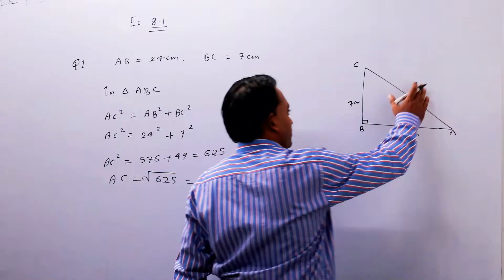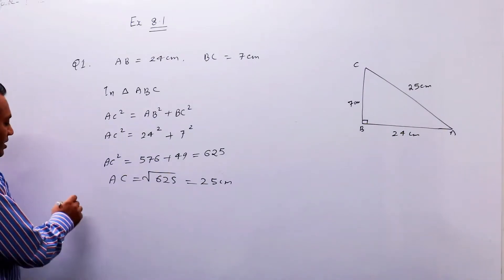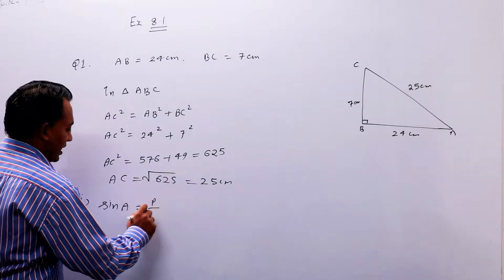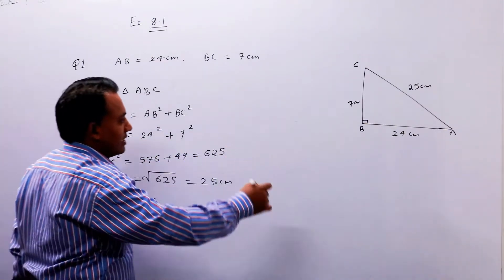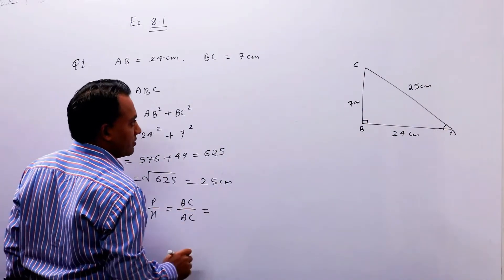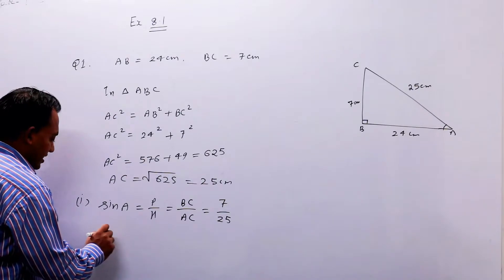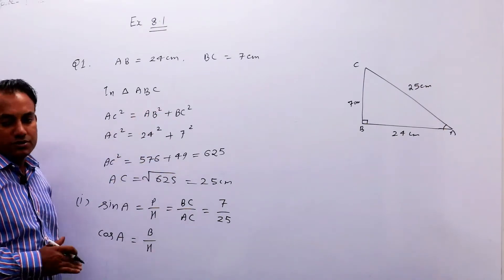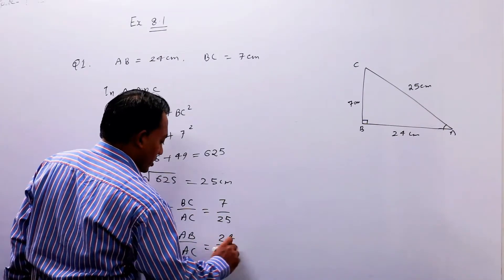अब आपके पास AC है — 25 cm। पहले part में sin A और cos A की value बतानी है। Sin A = P/H = perpendicular upon hypotenuse। Angle A के लिए perpendicular BC है, तो sin A = BC/AC = 7/25। Cos A = B/H = base upon hypotenuse = AB/AC = 24/25।